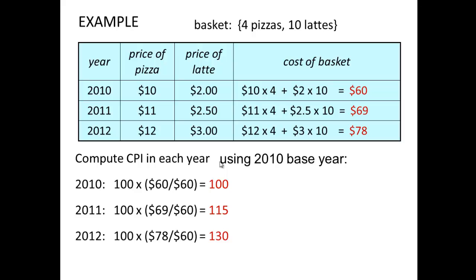What good is CPI if we can't use it to compare? Just as we did with GDP — real GDP versus nominal GDP — now that we've calculated CPI, we need to analyze it to make decisions. We're going to find the real CPI. The nominal CPI is the current price: sixty, sixty-nine, and seventy-eight. For the real CPI, we compare it to a base year — that's step four — and compute the CPI index. The formula is: cost of the basket in the current year divided by the cost of the basket in the base year, multiplied by one hundred.